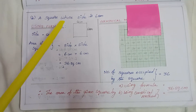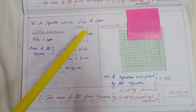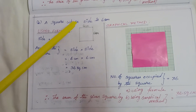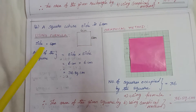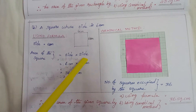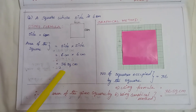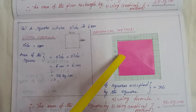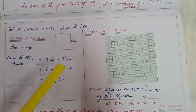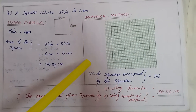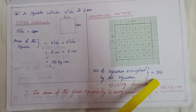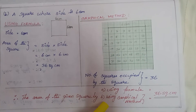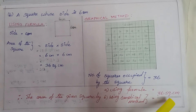The square whose side is 6 cm. Using the formula, the area of the square is equal to side into side. 6 cm into 6 cm is equal to 36 square cm. In the graphical method, I have drawn a square on graph paper. By removing the graph paper, the number of squares occupied by the square is equal to 36. Therefore, the area of the square by both methods is 36 square cm.